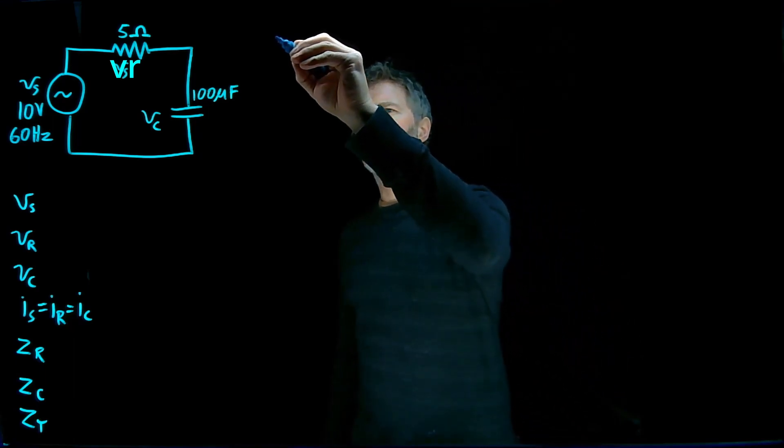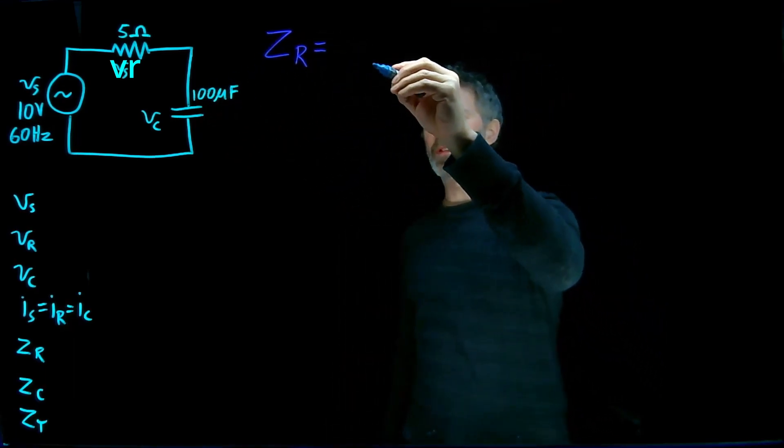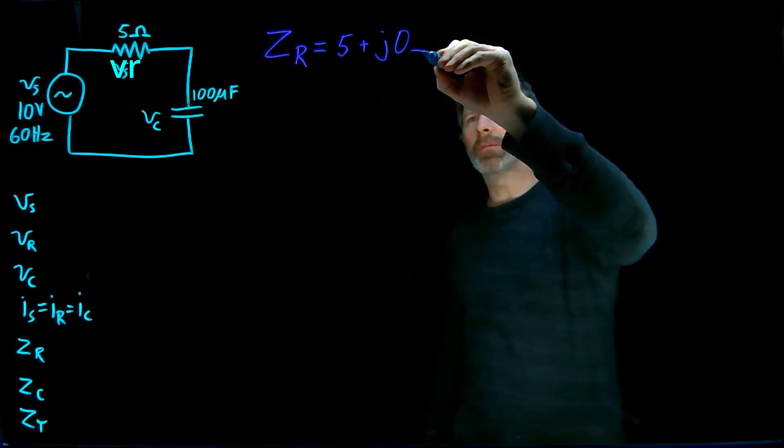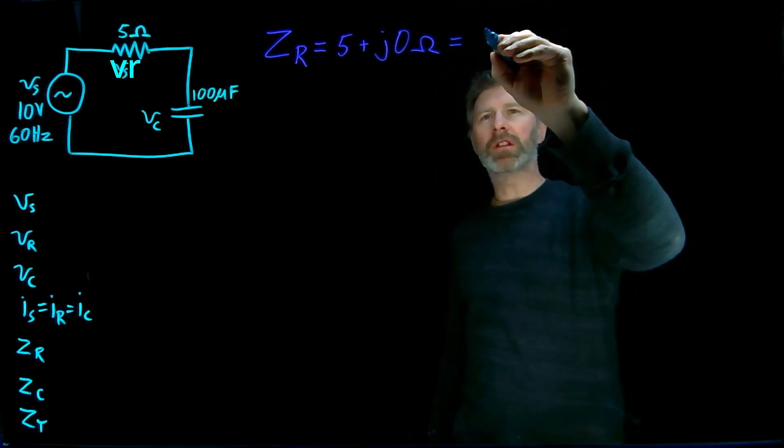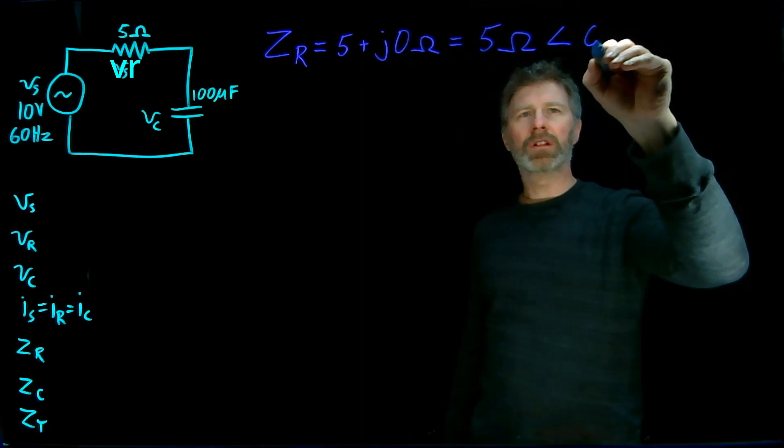These are fairly simple to figure out because the impedance for a resistor is simply the real part of the resistance and no imaginary part. In polar notation, that's five ohms with a phase angle of zero degrees.